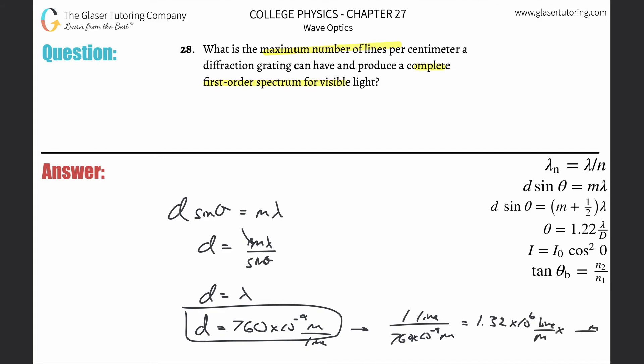We got to get rid of the meter and plug in centimeter. For every meter there's 100 centimeters, so you divide that by 100. So in other words, this would come out to be 1.32 times 10 to the 4th lines per centimeter.